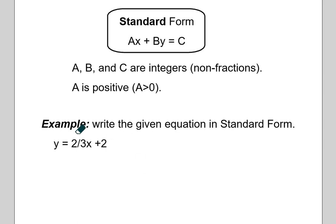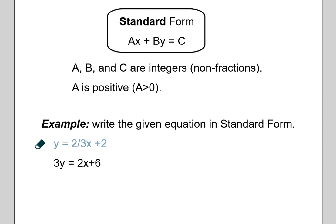The easy thing to remember is just that you don't have any decimals or fractions in standard form. For example, here is the equation of a line given in slope-intercept form, and we've been asked to write it in standard form. We're going to get rid of the fractions first because A, B, and C are integers, not fractions. So we're going to multiply everything by 3. By multiplying everything by 3, the entire equation stays equivalent, and we've gotten rid of the denominator. So now it's 3 times Y, 2 times X, and the constant 2 became 6.